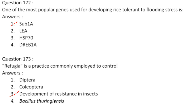Refugia is a practice commonly employed to control the development of resistance in insects. This topic has appeared consecutively in two DBT exams. Answer is option 3.